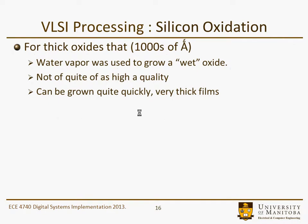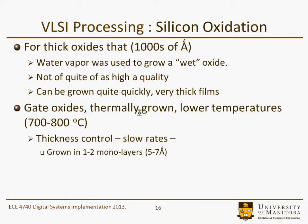For thicker oxides, you could grow them from a wet oxide. These are typically not going to be as high quality, but very thick films can be grown quite quickly. Gate oxides are typically grown at lower temperatures, giving much better thickness control and slower growth rates, and they are grown in monolayers.